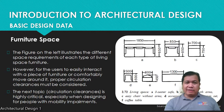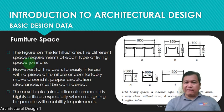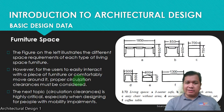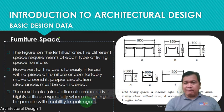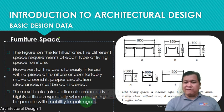The figure on the right illustrates the different space requirements of each type of living space furniture. However, for users to easily interact with a piece of furniture or comfortably move around it, proper circulation clearances must be considered. The next topic is highly critical, especially when designing for people with mobility impairments — that is, people with disabilities. When you reach higher design levels in architecture, you will study BP344, which covers in detail how to design buildings with consideration for PWDs or persons with disabilities.